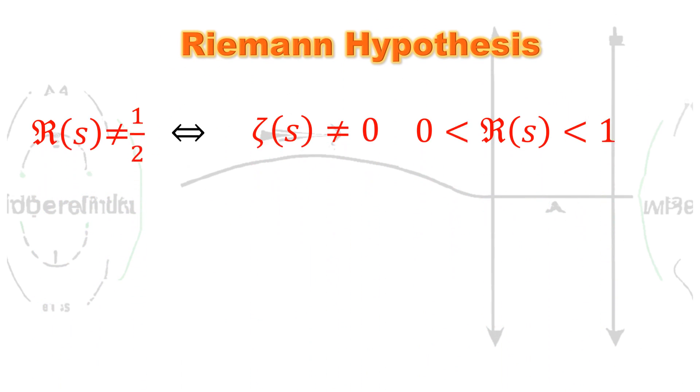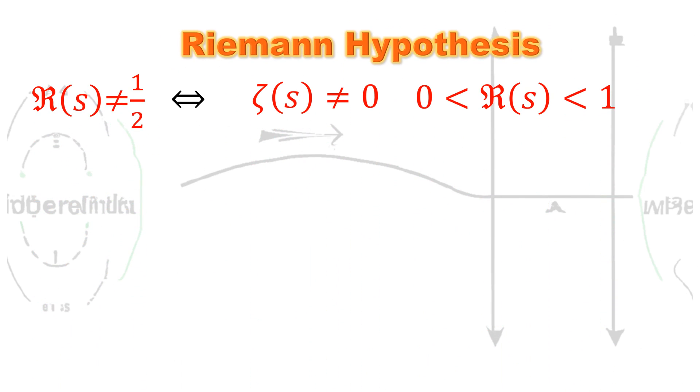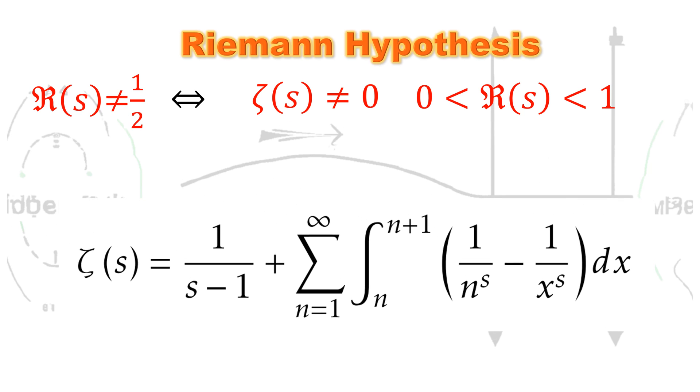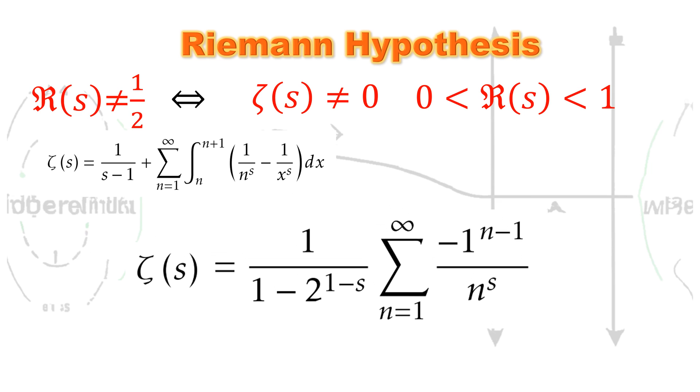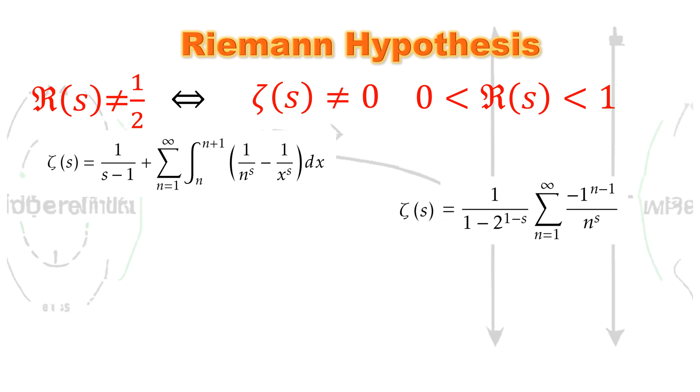We saw the deep connection between infinity equal to infinity and the Riemann's hypothesis, but why is this new indeterminate form a game changer for the Riemann's hypothesis? As you see, the analytic continuation functions are often messy.